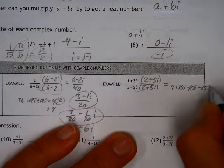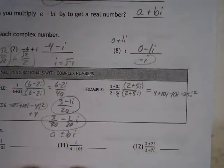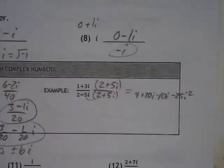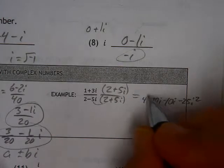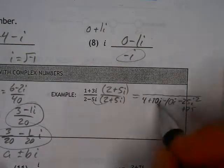And then a minus 25i squared. We know that should become plus 25 on the bottom. Plus 25. Or on the top.